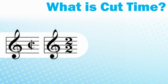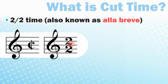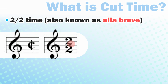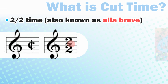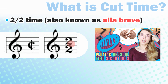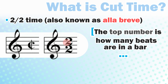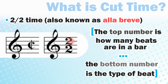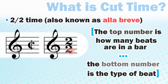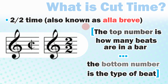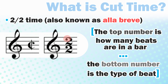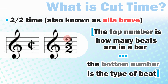What is cut time? Cut time is 2-2 time, also known as alla breve. If you remember our discussion on time signatures, the top number is how many beats are in a bar — so in this case, 2 beats per bar. The bottom number is the type of beat. For example, in 4-4 there are 4 quarter beats per bar. But in 2-2, we have 2 half note beats per bar.